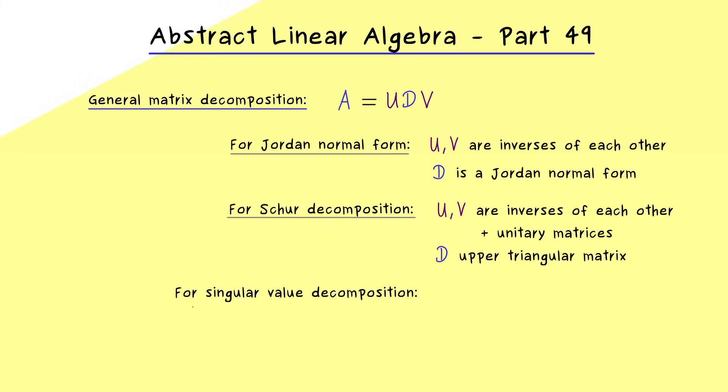And exactly this we definitely want to improve in our singular value decomposition. So we want to enforce that we always have a diagonal matrix D in the middle, which means we have to weaken the connection between U and V. So we have to drop the condition that U and V are inverses of each other. And please note, this immediately means that the singular value decomposition does not give us the fact that A and D are similar matrices.